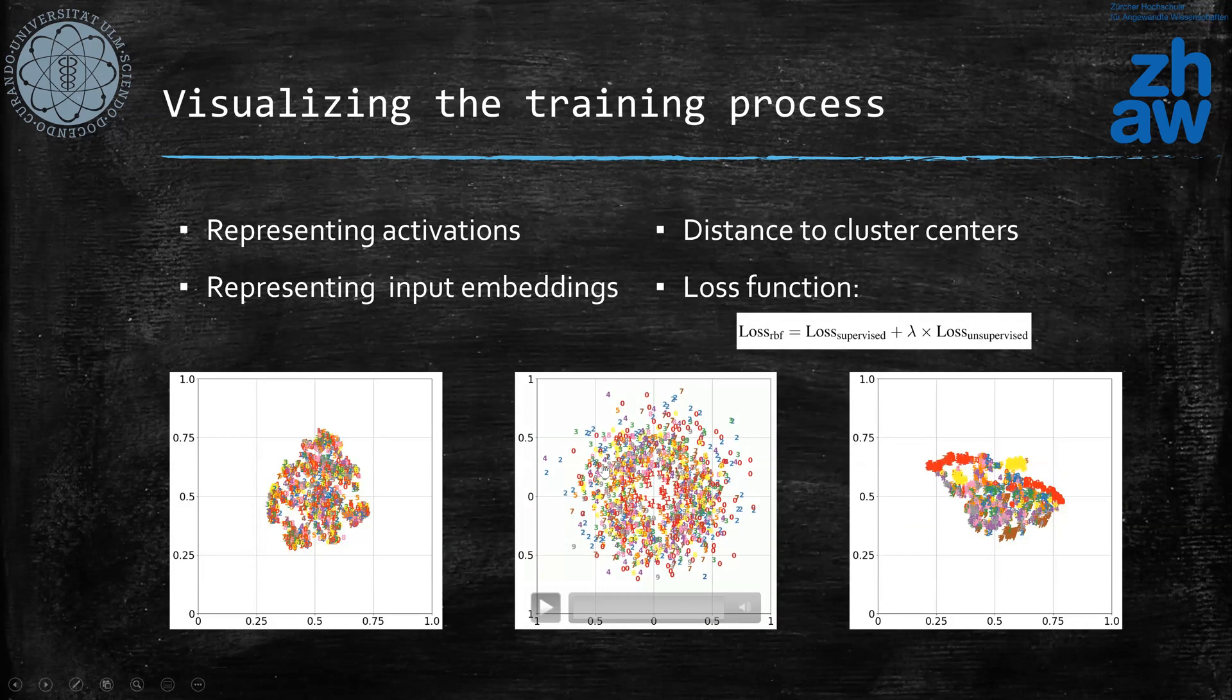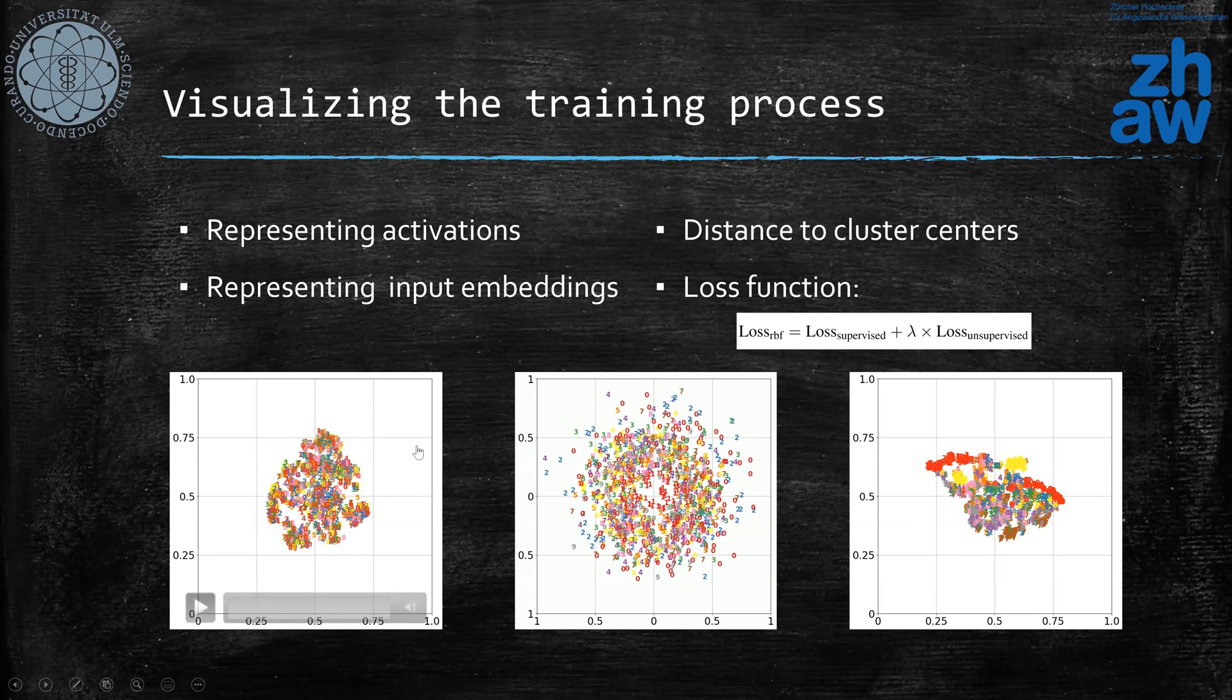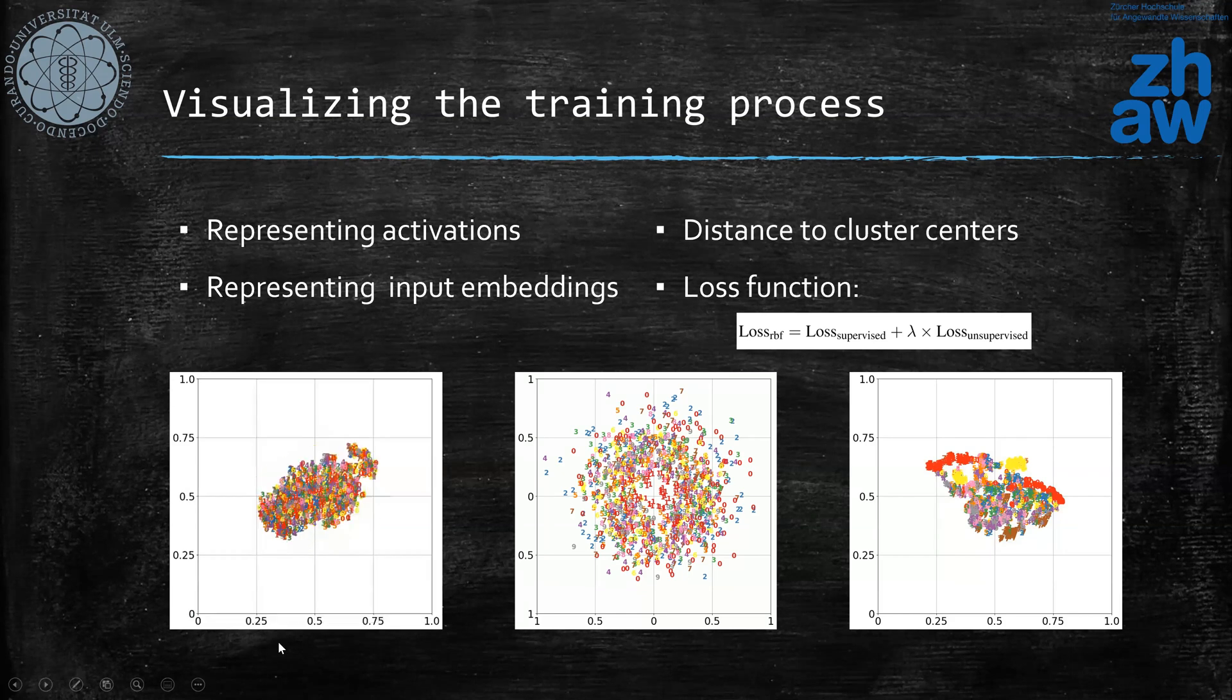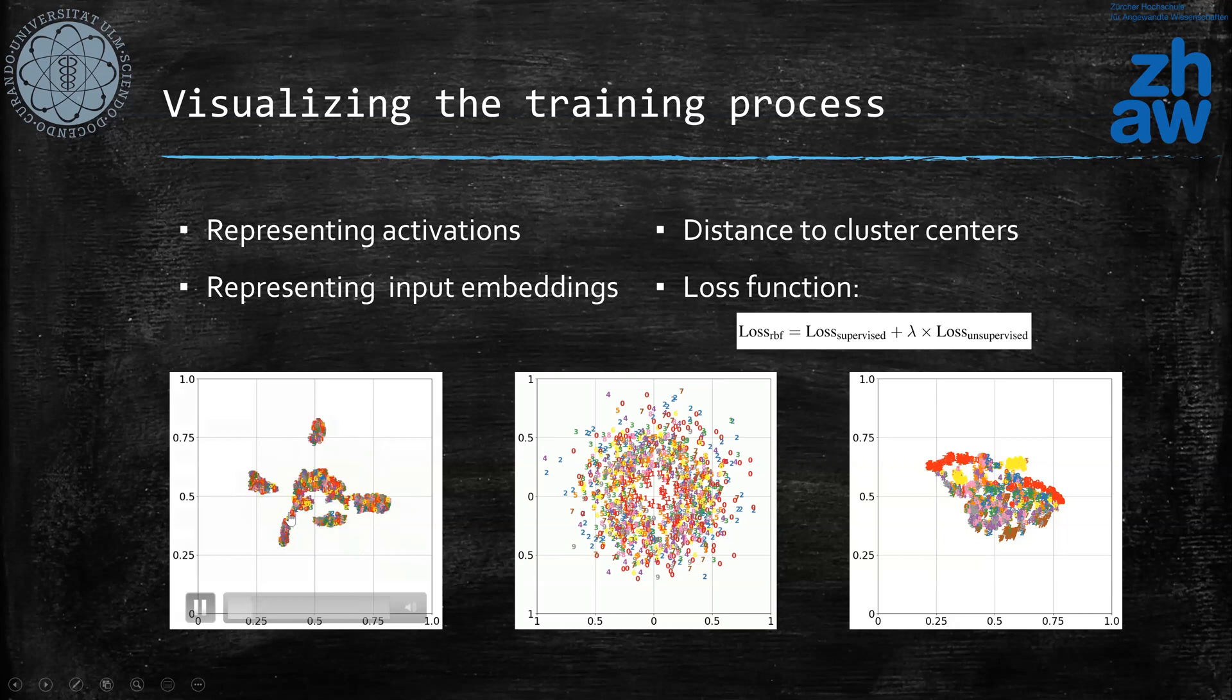In this slide, I would like to show you how the training process works in practice. For this slide, I used the MNIST dataset, and on right and left, you can see the two-dimensional representation of the input of the RBF, which is the embeddings of the CNNs, and the activations of the clusters, basically after computing the distance and applying the activation functions. On left, you can see that the unsupervised loss is more prominent, meaning that during the training process, the data samples are divided into clusters which are not corresponding to the ground truth labels.